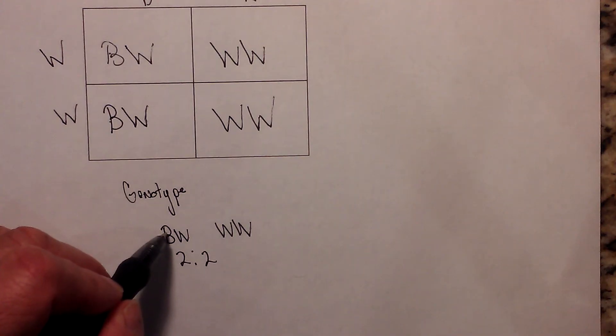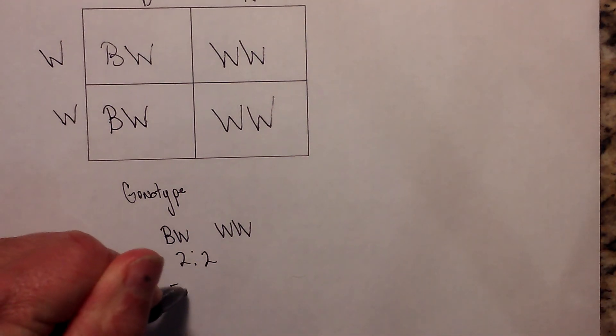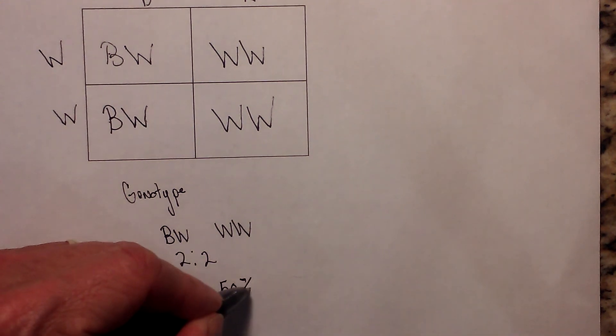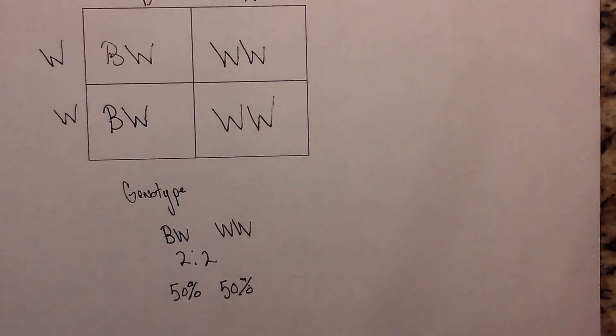This BW will be patchwork. We have 50% patchwork and 50% white. So there we go, incomplete and codominant setting up the Punnett square. Thanks for watching. MooMooMath uploads a new math and science video every day. Please subscribe and share.